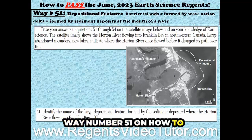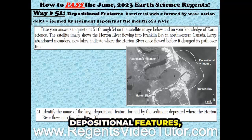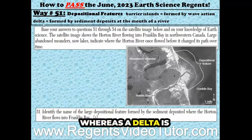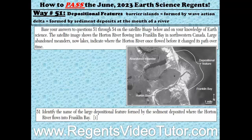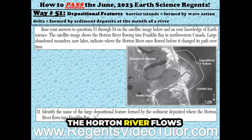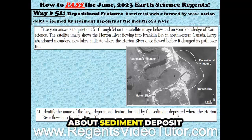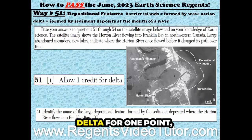Way number 51 on how to pass the June 2023 Earth Science Regents. Depositional features such as barrier islands are formed by wave action, whereas a delta is formed by sediment deposits at the mouth of a river. Identify the name of a large depositional feature formed by the sediment deposited where the Horton River flows into Franklin Bay. Because they talked about sediment deposit at the mouth of a river, we're talking about a delta for one point — and that's all you need to write is the word delta.